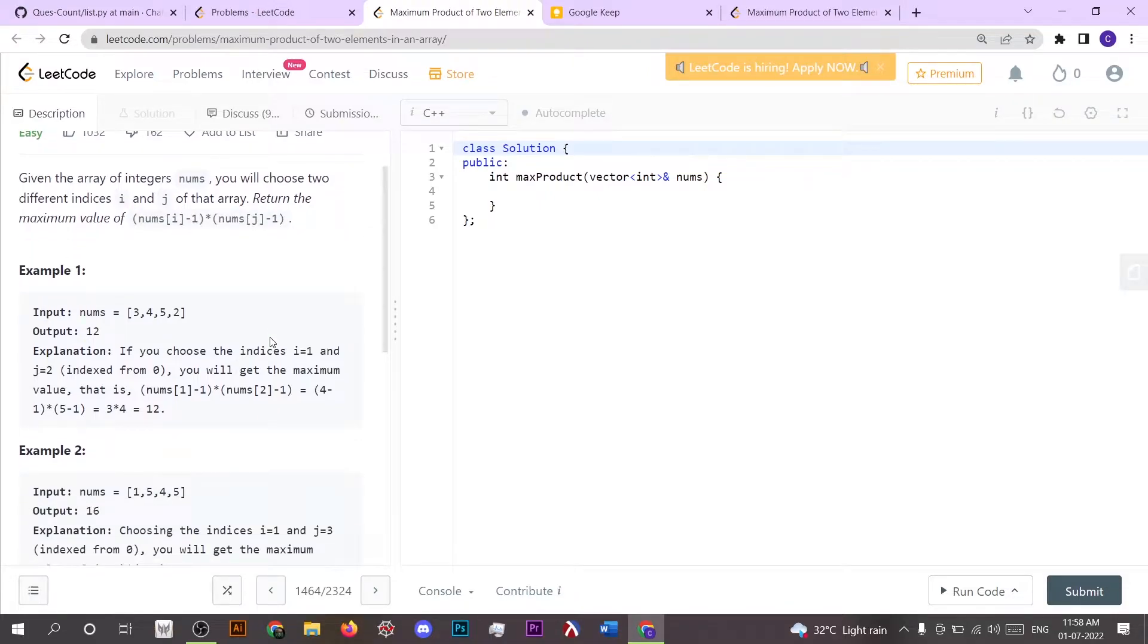The very first approach which we can think of is we can use two nested loops. The first loop will go from i equals 0 to n and the second loop goes from j equals i to n.